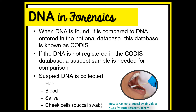So how is DNA collected from a suspect? DNA can be collected from hair, blood, or saliva, but most commonly it's collected from cheek cells. We call this a buccal swab, where an investigator or lab analyst collects cheek cells from the suspect and then a DNA profile is created from that sample.